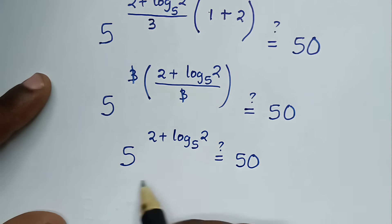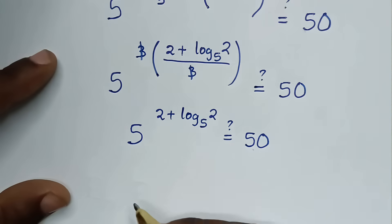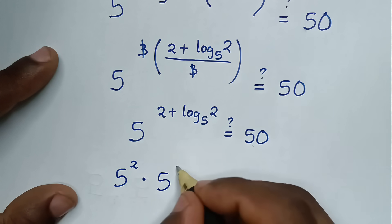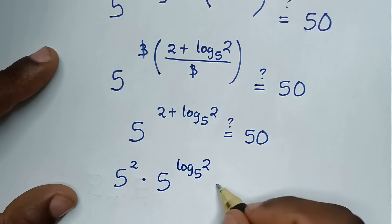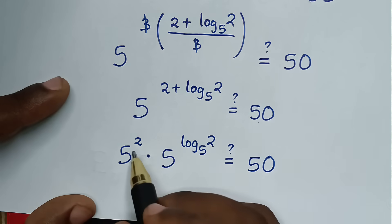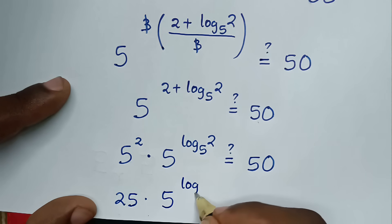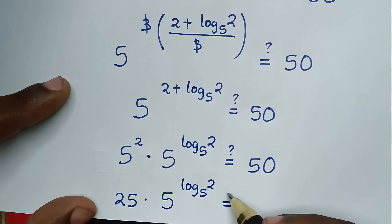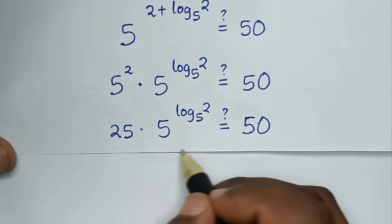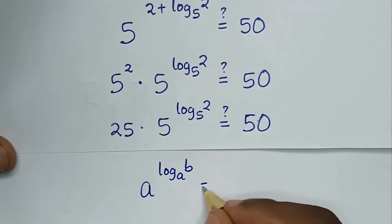From this part, 5 power of (2 plus log of 2 base 5) can be split using the product rule into 5 power 2 times 5 power of log of 2 base 5. Now 5 power of log of 2 base 5 is in the form A power of log B base A, which equals B. So 5 power of log of 2 base 5 is equal to 2.